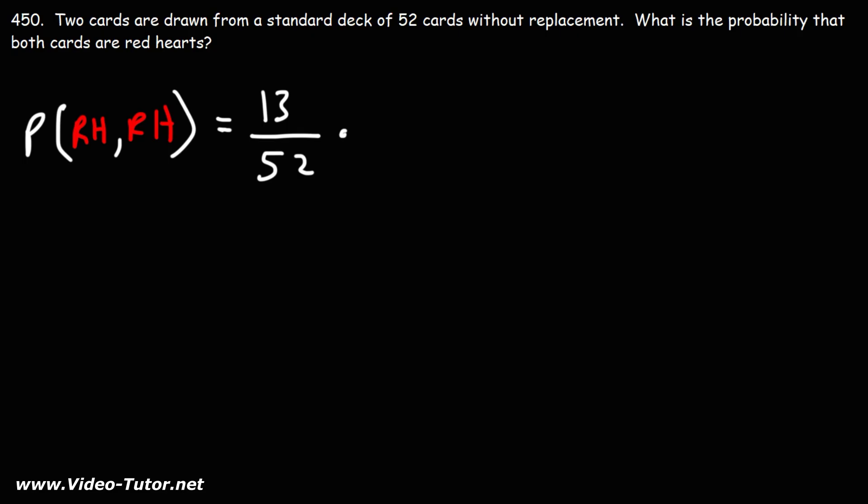Now, on the second try, we need to pay attention to the fact that this is done without replacement. So, once we draw the first card, we're not going to put it back. There's 51 cards remaining. And we took out a red heart, so there was 13 red hearts. Now, there's 12.